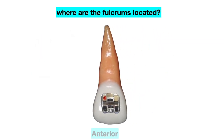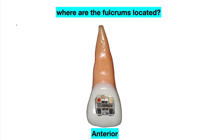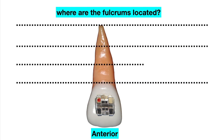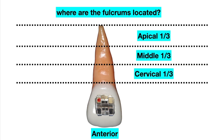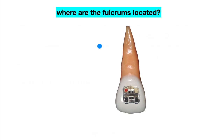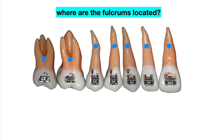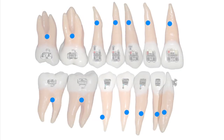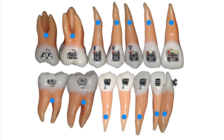And for anterior teeth, like this incisor here, I have the limits of the root and I will divide the root into three thirds: apical, middle, and cervical thirds. So the fulcrum is exactly in between the apical and the middle thirds. I have the upper and lower fulcrums here, looking from the occlusal view, as you can see.